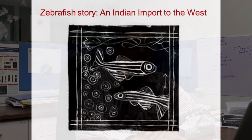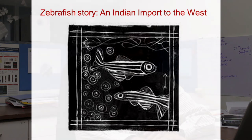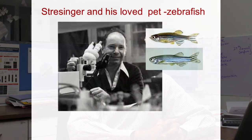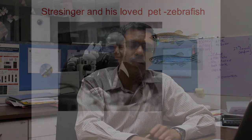Zebrafish is largely a fish found in the Indian subcontinent and can rightly be said to be an Indian import to the West. It's a small hobby fish first brought into the laboratory by a scientist called Streisinger at the University of Oregon, who used it as a pet fish and identified that it could be used to teach biology. Since then it has taken great strides and laid down important discoveries in developmental biology.